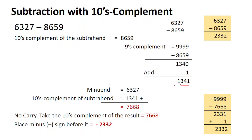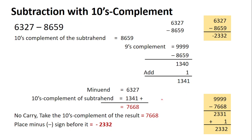Now take the minuend as it is, write the tens complement, and add them together. When you add: seven plus one is eight, two plus four is six, three plus three is six, six plus one is seven. There is no carry in this case. When there is no carry, we are supposed to take the tens complement of the result.